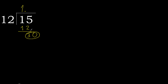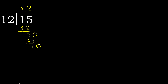Now we have 30. 12 multiplied by 3 is greater, so try multiplied by 2 — 12 multiplied by 2 is 24. 24 is not greater, so subtract. Complete — point.